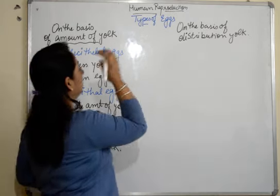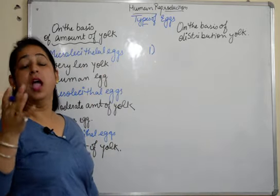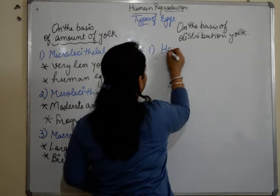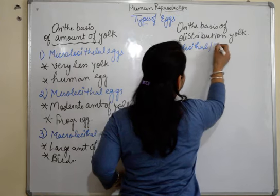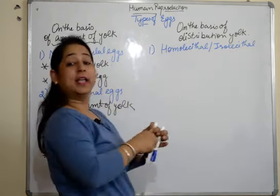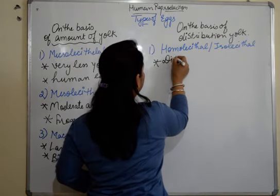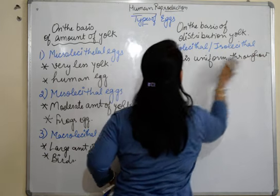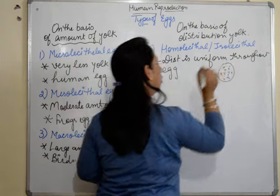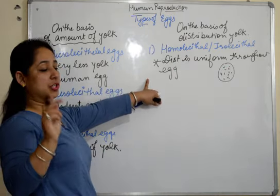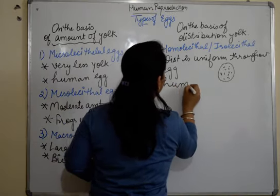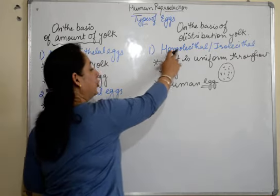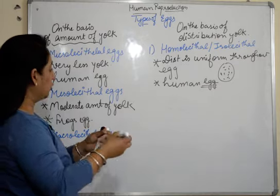Now we will talk about the division of eggs on the basis of distribution of yolk — how the yolk is distributed in the egg. The first type is homo lecithal, also called iso lecithal, meaning the yolk is distributed uniformly throughout the egg. The human egg is an example, so the human egg belongs to two categories: micro lecithal and homo lecithal.